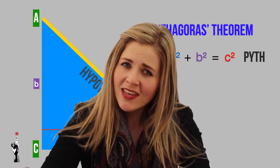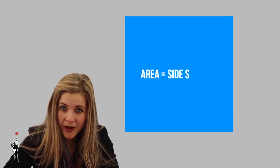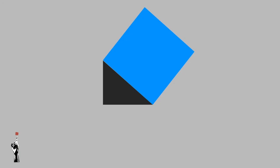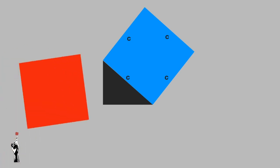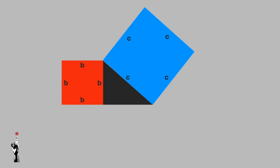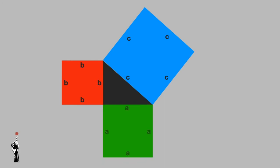You may wonder why the equation is squared. Consider a square — its area is side squared, meaning side times side. If we draw a square on each side of the right-angle triangle, the square on the hypotenuse has all sides equal to C, the square on another side has all sides equal to B, and the last square has all sides equal to A. So the theorem A squared plus B squared equals C squared really means: the area of the green square plus the area of the red square equals the area of the blue square.